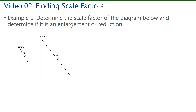Example one says: determine the scale factor of the diagram below and determine if it's an enlargement or reduction. Comparing the original triangle to the image triangle, we can see it's an enlargement because the image is bigger than the original. That's important to know because it means our scale factor should be a value greater than 1 — if it's less than 1, we know we made an error.